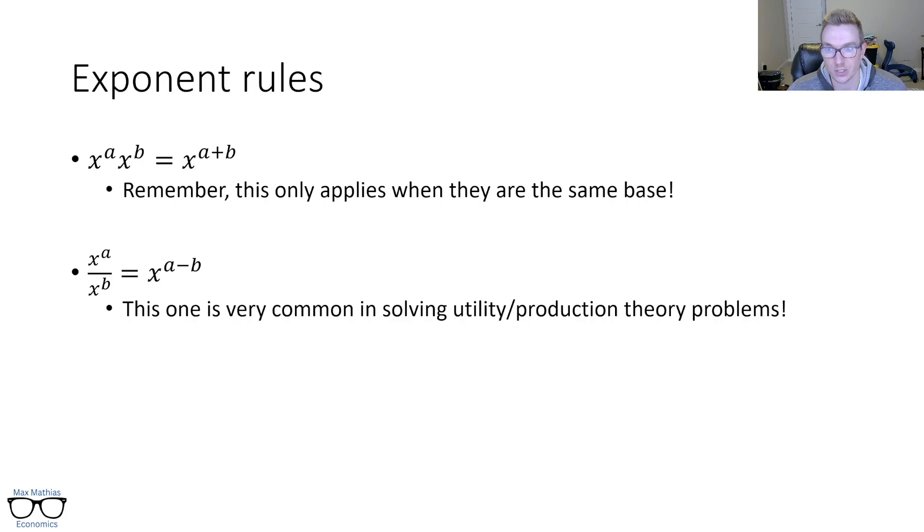This is very common in solving utility production theory problems, when we're doing optimization, like a Cobb-Douglas, when you're bringing that power down, usually it's negative, and then you got to put it into the denominator, or vice versa. A special case of this is x to the minus one is just equal to one over x. And so this is that kind of rule I'm talking about. Anytime you have something to a negative exponent, that's equivalent to basically putting it in the denominator and removing that negative. So you could basically think of that one over x is equivalent to one over x to the one power. That's implicitly assumed there.